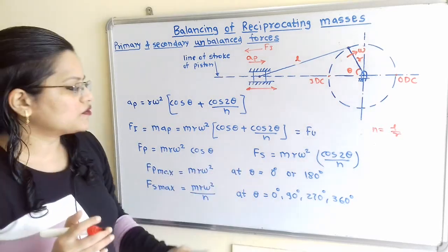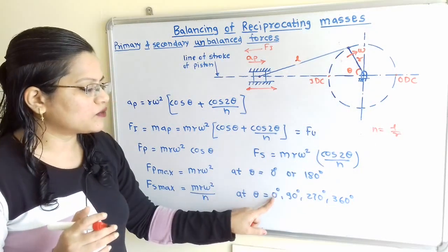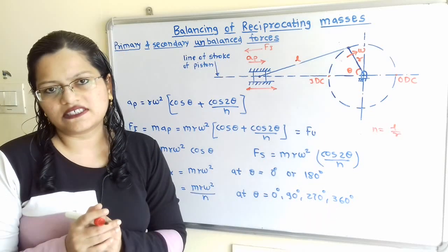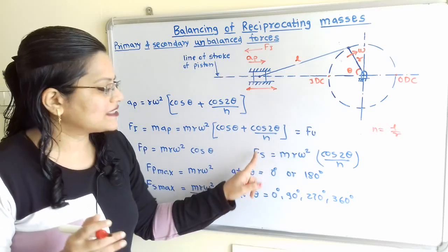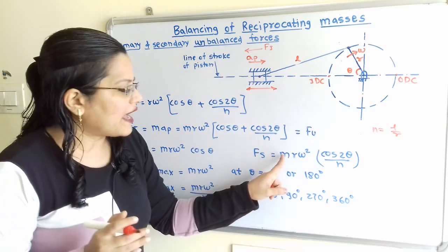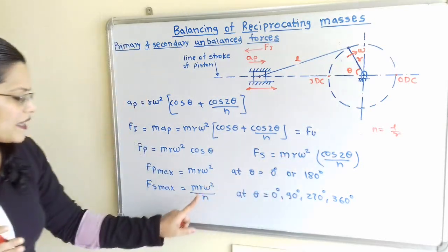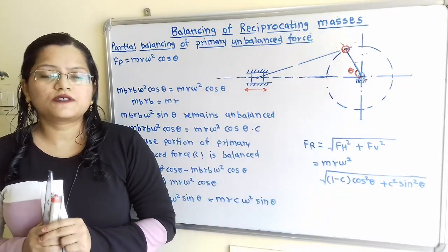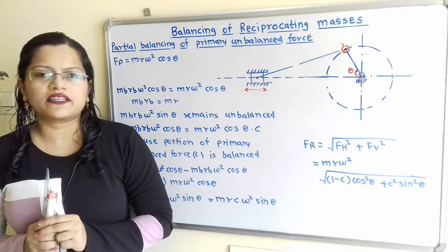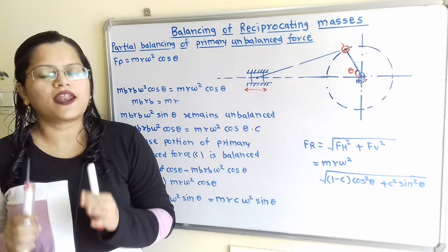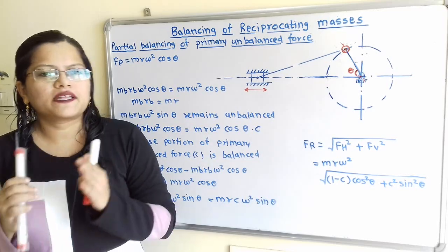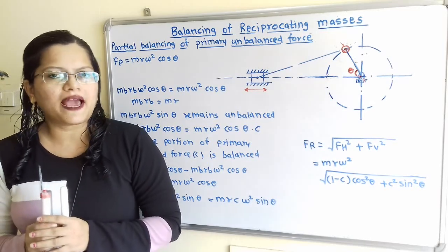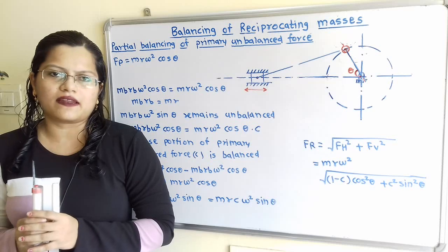For the secondary force, the maximum value occurs when θ = 0°, 90°, 270°, or 360°, and equals M·R·ω²/N. In slow or moderate speed engines, the secondary unbalanced force is small compared to the primary unbalanced force, so we focus on partial balancing of the primary unbalanced force.